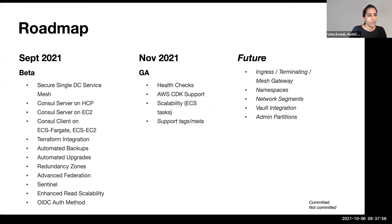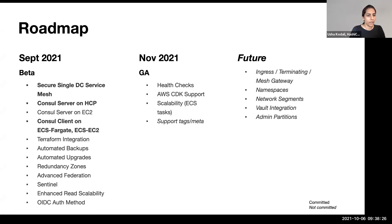Here is the roadmap of features released and upcoming. In beta, I want to focus on some highlighted features, particularly the secure single DC service mesh. Console service mesh enables defense-in-depth security mechanisms using access control lists, transport layer security, and gossip encryption, ensuring zero trust for your service mesh. You can also deploy console servers using HCP, our HashiCorp cloud platform, which is a fully managed platform that lets you deploy console clients on ECS Fargate and EC2.